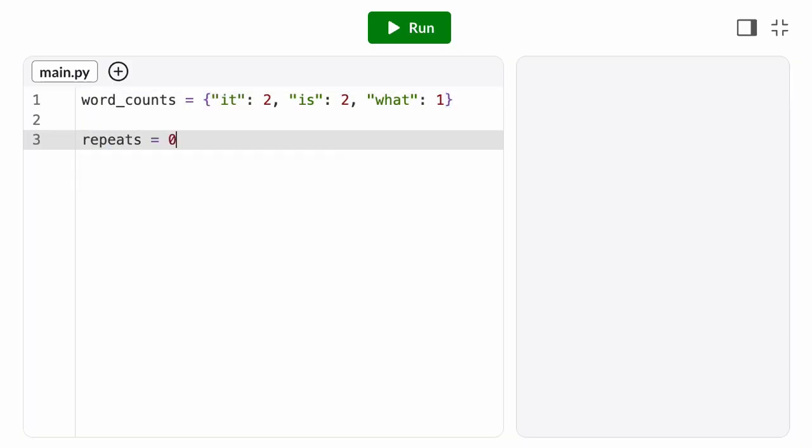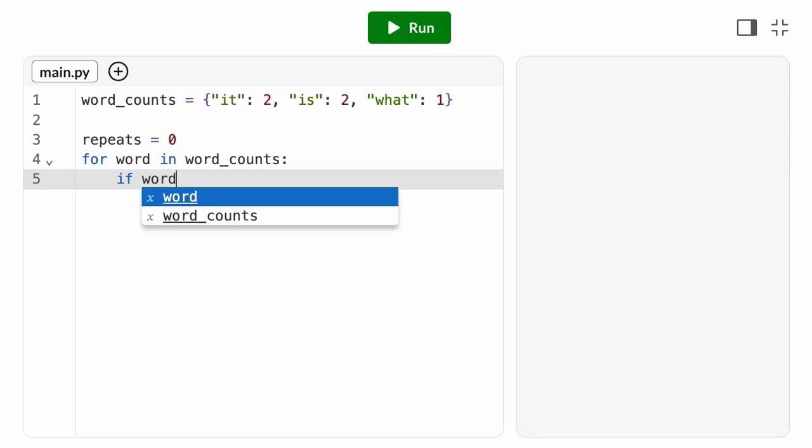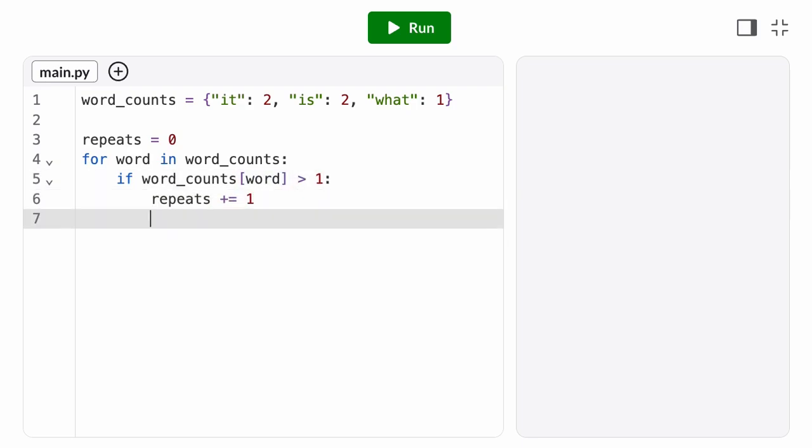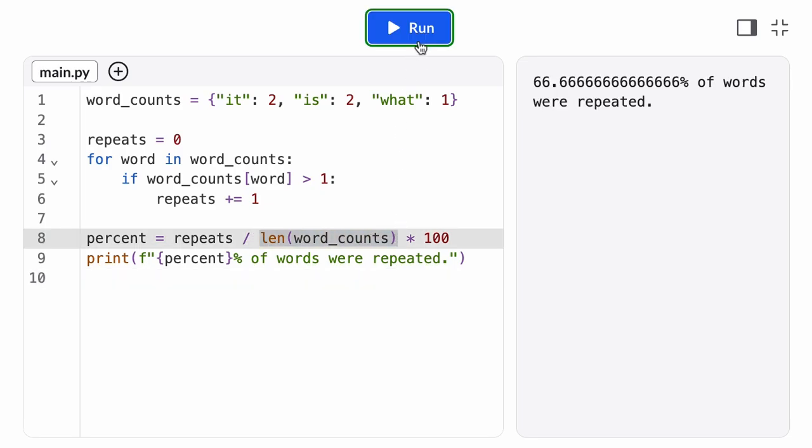What if I want to know what percentage of words were used more than once? I need to keep track of the number of words whose count is greater than 1. The total number of unique words is just the length of the dictionary. I'm using a very small dictionary here so we can trace it. But you can imagine this analysis would be a lot cooler with a dictionary with more words.